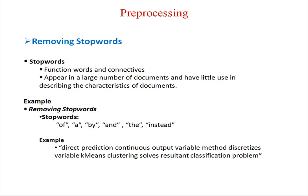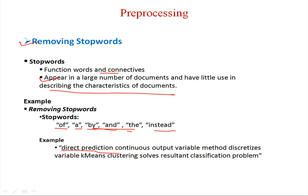The first task in preprocessing is removing stop words. Stop words are words like 'of', 'a', 'and', 'by', etc. There exists a list of stop words we can use to remove such words. These function words and connectives appear in a large number of documents and have little use in describing the characteristics of documents. An example of the removal of stop words is shown here.